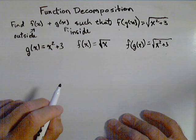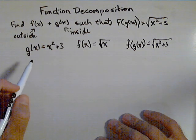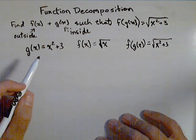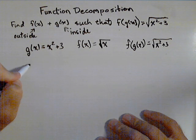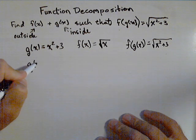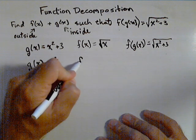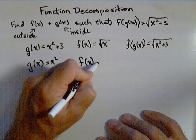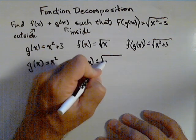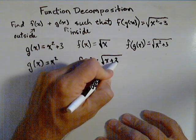Now, one thing to note about function composition is there's an infinite amount of ways to do this. For instance, I could just let my inside function, g of x, just be x squared, and I could let my outside function be square root of x plus three.